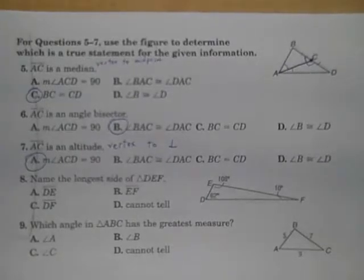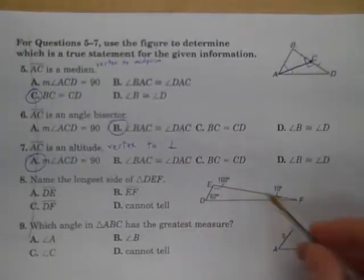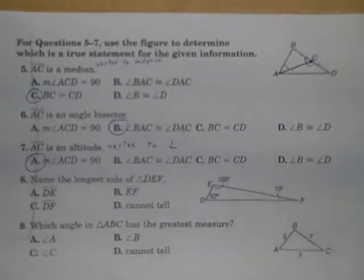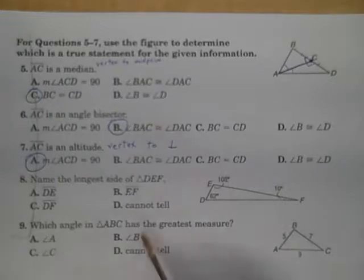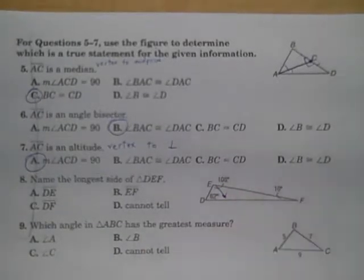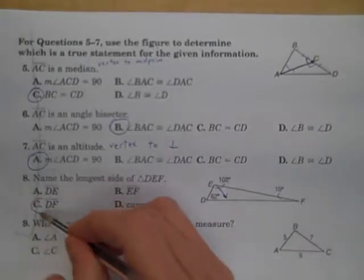Now number 8, the longest side of triangle DEF. And we have the three measures here, 108 degrees, 62 degrees, and 10 degrees. The longest side is opposite the biggest angle. Well angle E is 108 degrees, the side opposite that is segment DF.